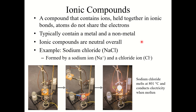Ionic compounds are compounds that contain ions held together in ionic bonds. The atoms do not share electrons — instead, the positive and negative charges of the ions attract each other to form a compound. Ionic compounds almost always contain a metal and a non-metal, and they are neutral overall. For example, table salt, sodium chloride, is an ionic compound formed by a sodium ion and a chloride ion.